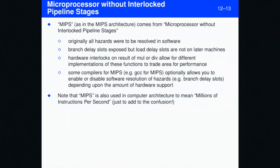Branch delay slots were exposed, but load delay slots were not on later machines. They were on the original machine. Hardware interlocks on results of multiply and divide are there for different implementations of these functions, so different implementations of these functions trade area and performance.